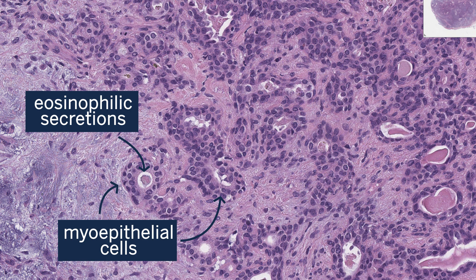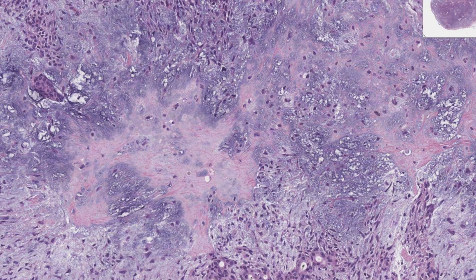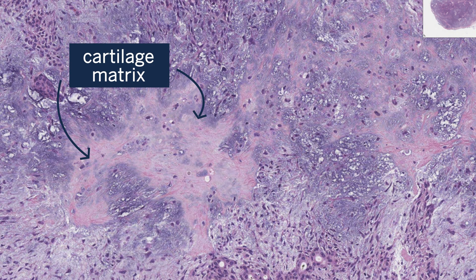Besides the biphasic nature, a couple of important features of pleomorphic adenomas include cartilage. We can see cartilage here, and that's an important diagnostic feature — if you see cartilage in a salivary gland tumor, your diagnosis is pleomorphic adenoma. That's it. Or carcinoma ex pleomorphic adenoma. Nothing else produces cartilage except the pleomorphic adenoma family of tumors.